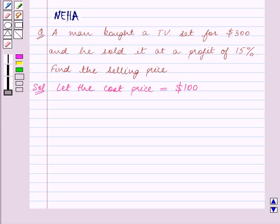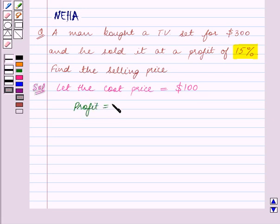Now we are given that the profit is 15%. So let's calculate the profit on this cost price which is $100. We get profit is equal to 15% of the cost price which we have assumed to be $100.